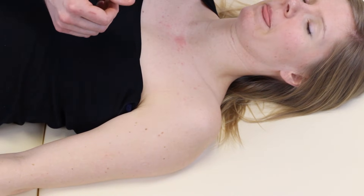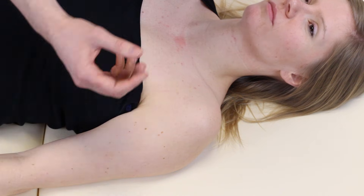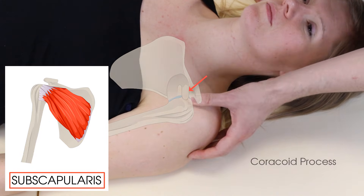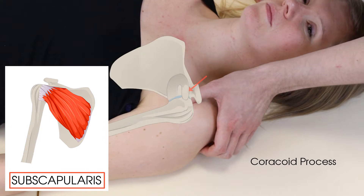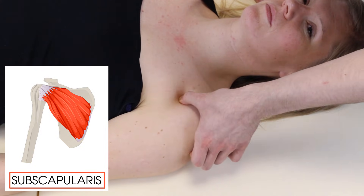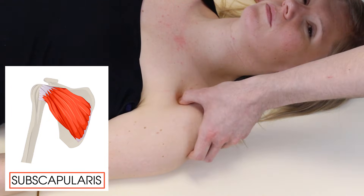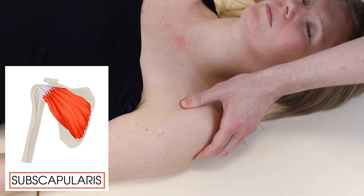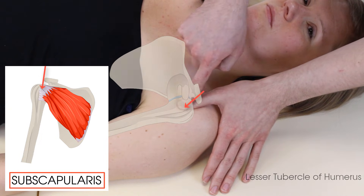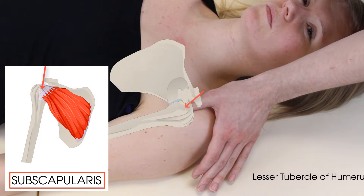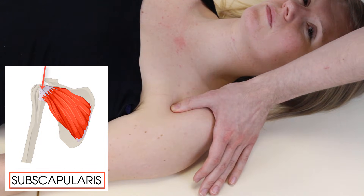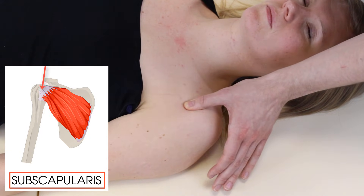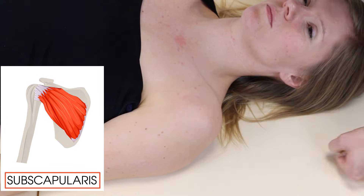Moving on, we can assess a portion of subscapularis by palpating via the coracoid process. Place your thumb on the humerus, move medially, and feel for the coracoid — it has quite an acute angle as seen in anatomy textbooks. Once found, drop off laterally to locate roughly the lesser tubercle. Guide your thumb or finger up and down there — you'll be palpating through pec tissue and an aspect of subscapularis — and check whether it's adversely tender relative to the other side in the context of your patient's history.